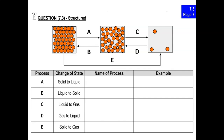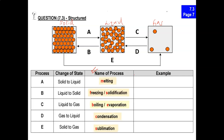For the structure question, let's look at the name of the processes. We need to identify the states from the diagram. This is a solid, this is a liquid, and this is a gas. Liquid state particles are closely packed but irregularly arranged. Gaseous state particles are far apart and randomly arranged. Please pause the video and fill in the name of the processes for A to E, then we will work on the examples together.